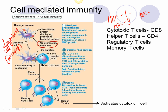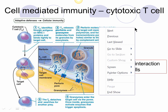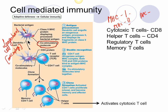When the CD4 (helper T) cell recognizes the foreign antigen and co-stimulatory molecule on the dendritic cell, it gets activated and forms numerous clones — many more helper T-cells, with one becoming a memory T-cell to recognize that antigen later. These helper T-cells then activate the cytotoxic T-cell. It's almost as if the antigen-presenting cell is signaling: 'I've been attacked — I'm carrying this foreign antigen, help me.' The helper T-cells respond by activating cytotoxic T-cells.